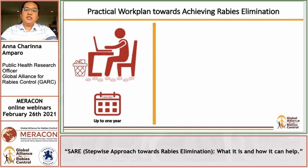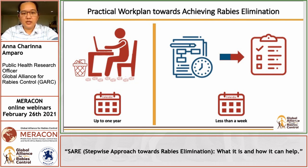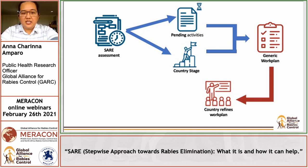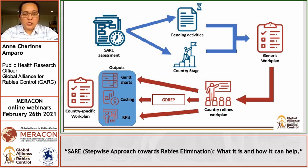Regarding the practical work plan: typically when we think of developing rabies work plans, we would think of at least a year's worth of meetings and workshops. One major advantage of the SARA assessment is this process would take only about a week. The practical work plan towards achieving rabies elimination automatically generates a work plan based on the completed SARA assessment. Based on the pending activities and the country stage, we have the generic work plan. The country will then further refine this work plan, after which it will have Gantt charts, costing, and key performance indicators or KPIs. There is also the GDREP, another tool developed by USCDC that will help in estimating costs of a rabies program, resulting in the country-specific work plan.